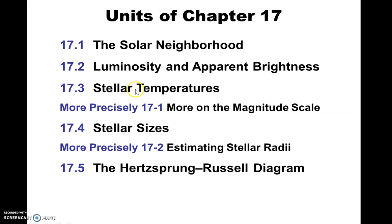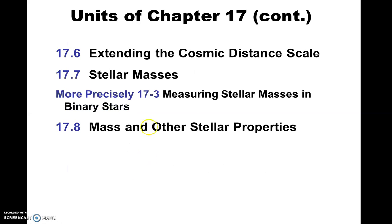Then we'll look at stellar temperatures. Wien's law tells us the surface temperature of the star. We'll talk a little more about the magnitude scale and the sizes of stars — there are different ways of estimating the size of a star. Then we'll turn to a huge tool in astronomy when it comes to stars: the HR diagram, or the Hertzsprung-Russell diagram. We'll look at that in extensive detail, and we'll probably be using it for most of the rest of the semester. Then we'll extend our distance scale out into our own galaxy and to other galaxies.